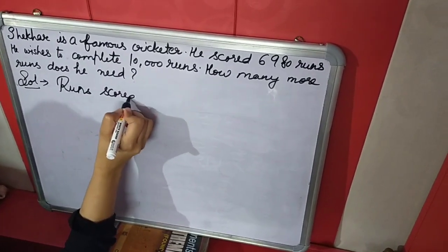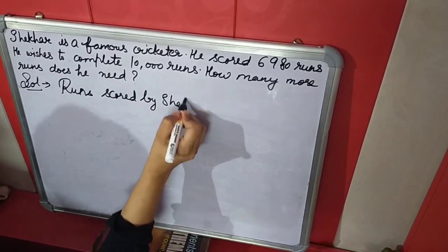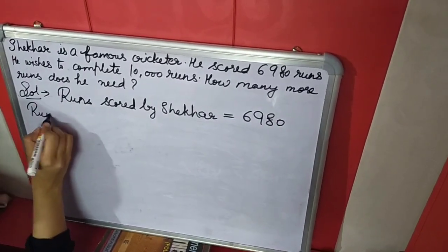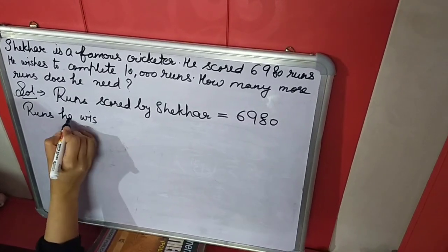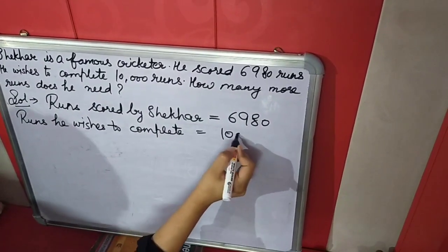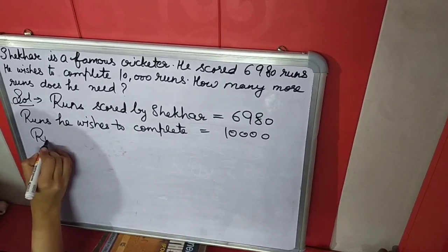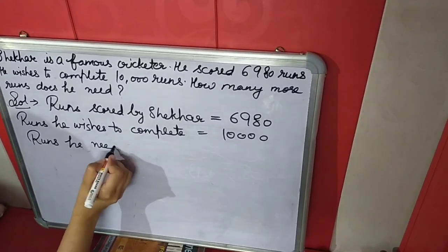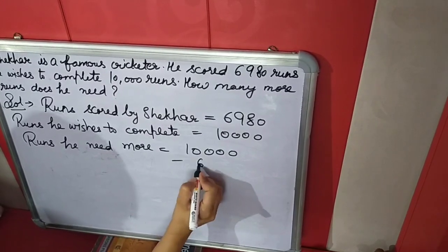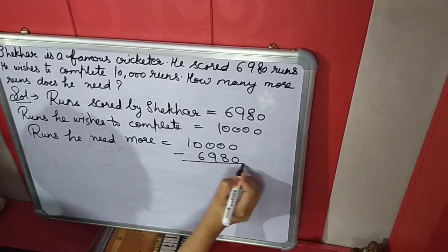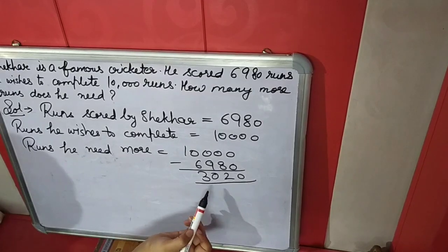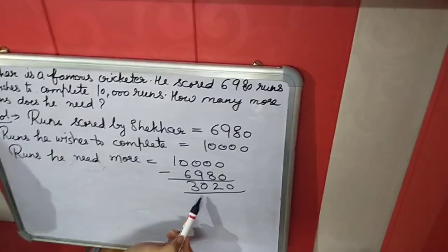Runs scored by Shaker: 6,980. Runs he wishes to complete: 10,000. So how many runs does he need to complete 10,000? The answer is 3,020. Now pause this video, write down these questions in your notebook, and solve them. After solving the third question, you have to learn Roman numerals.